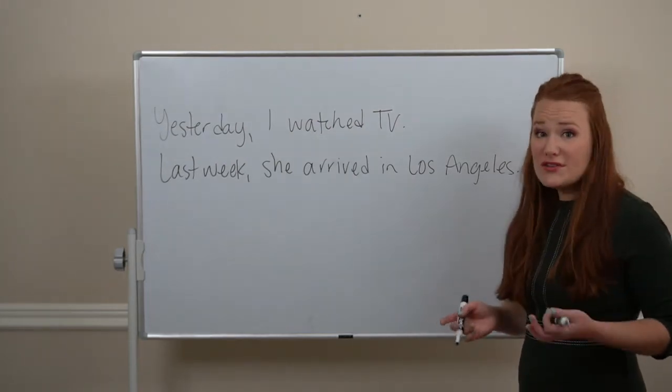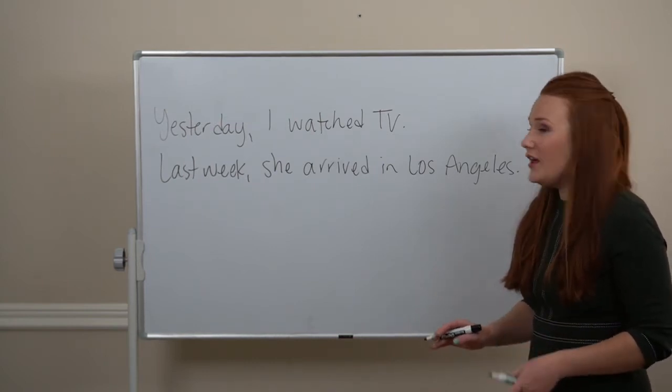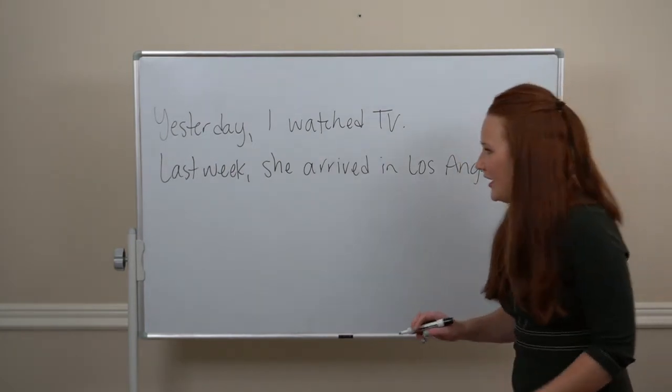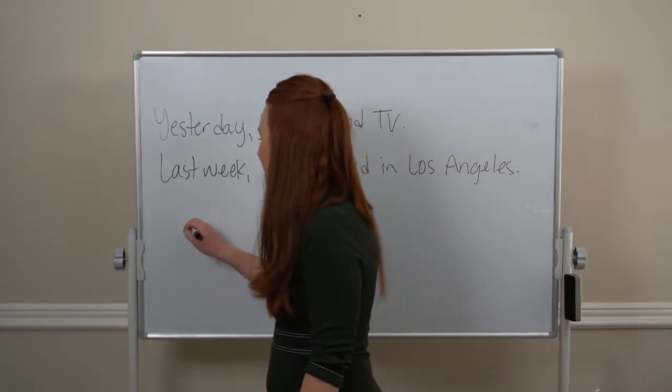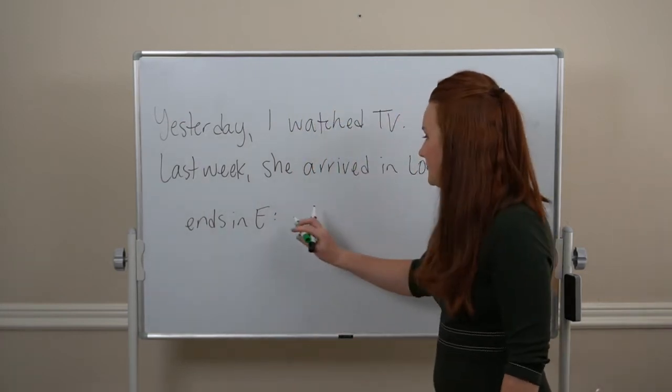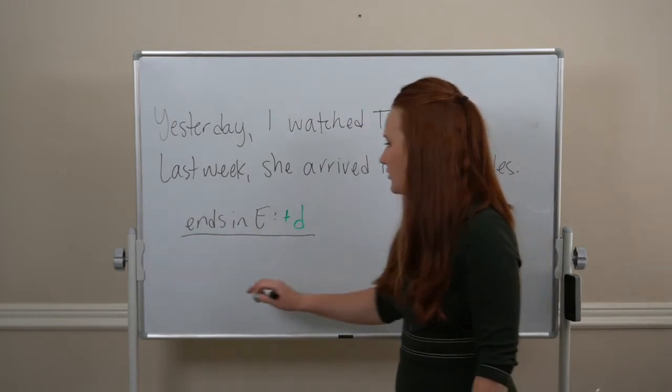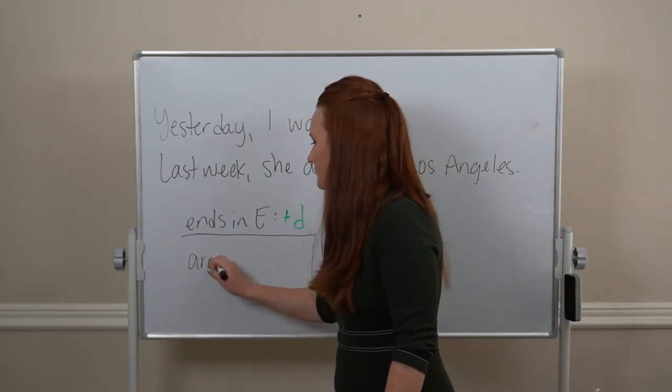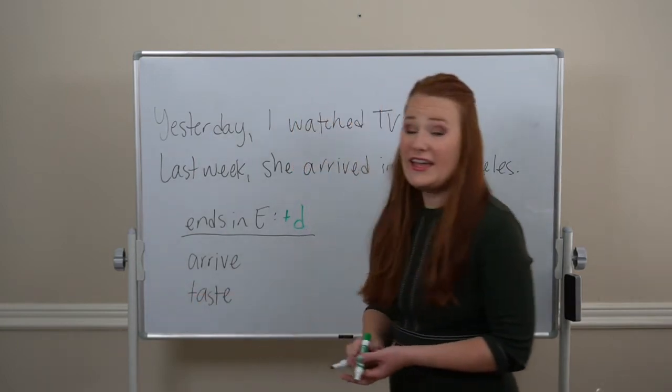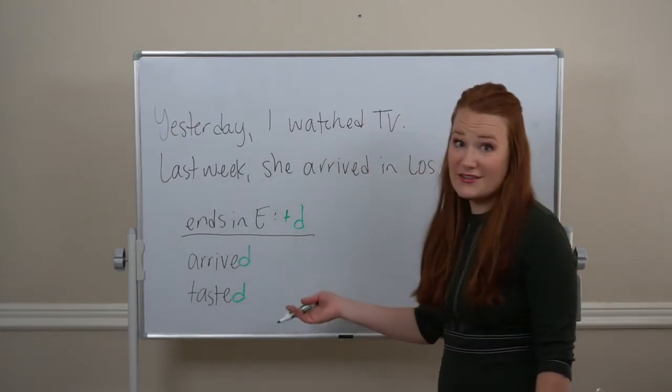So, for most verbs, it's easy to form the past simple form. We are just going to add a D or an ED. If your verb ends in an E, we're just going to add a D. So, our verb arrive or taste. These both end in an E. We're just going to add the letter D. Arrived, tasted.